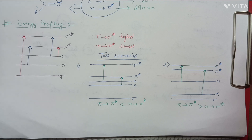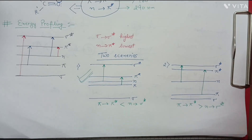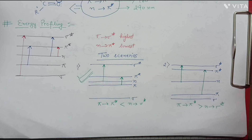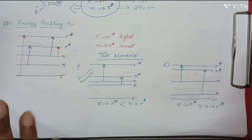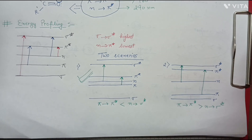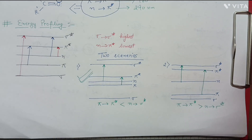These are the two scenarios, but we mostly encounter the first scenario. Unless it is specifically mentioned that pi and pi star lie near to sigma and sigma star, we will consider the first case. So for us, the pi to pi star energy gap will be less than the n to sigma star gap, unless stated otherwise.